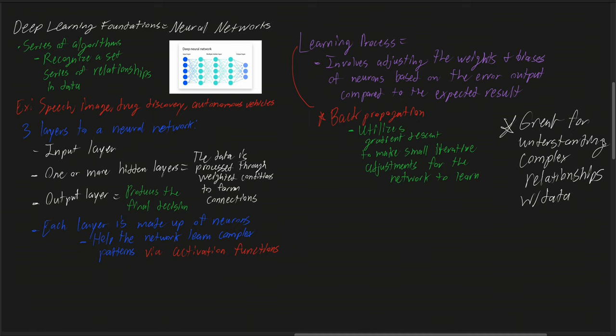So going over what we have already done: a neural network is really just a series of algorithms which recognize a set series of relationships in data, and the applications range from speech, image, drug discovery, and autonomous vehicles, just to name a few.